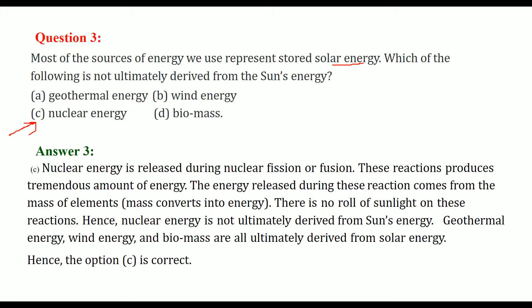Nuclear energy is released during nuclear fission or fusion. This produces a tremendous amount of energy, which comes from the mass of the element — the mass is actually converted into energy. There is no role of sunlight in these reactions, so nuclear energy is not ultimately derived from the sun's energy.